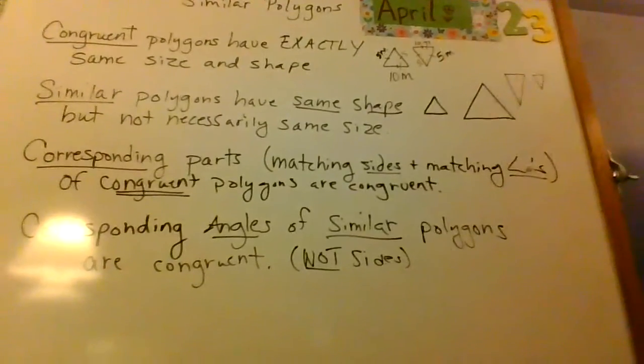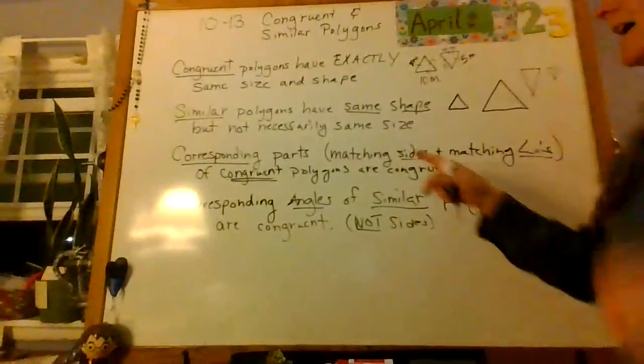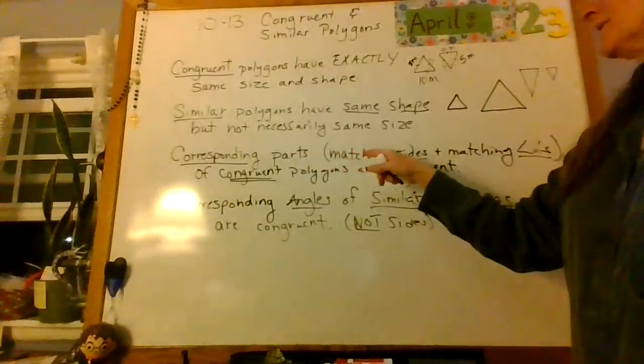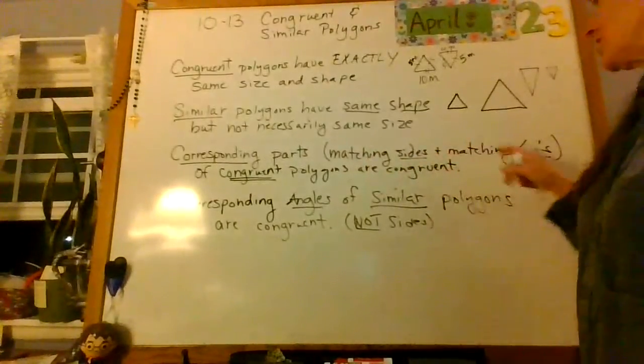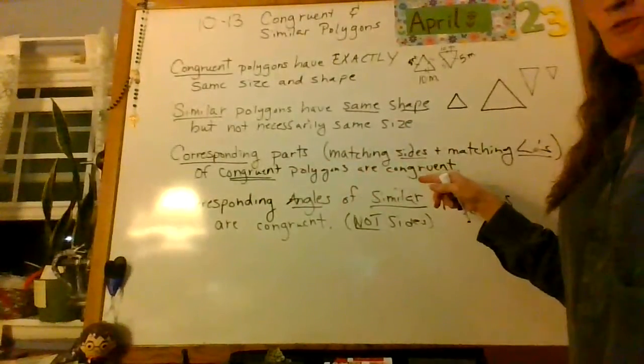So, we'd match our hash marks up, and know that those are congruent. All right. So, when we're looking at corresponding parts, that means matching sides and matching angles of congruent polygons. They are congruent.